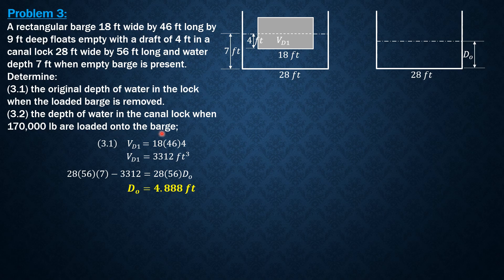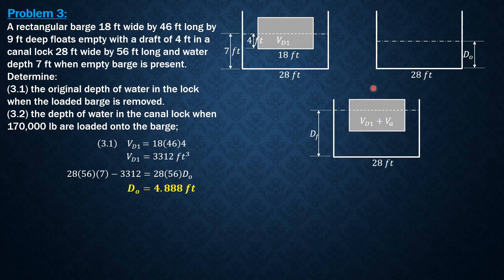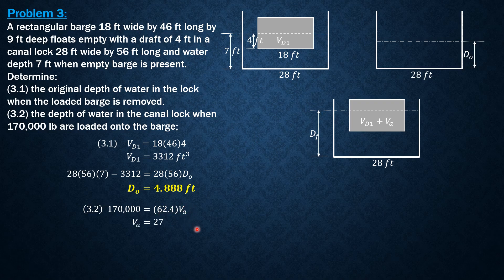For the depth of water in the canal lock when 170,000 pounds are loaded onto the barge: when an additional 170,000 pounds are loaded, the displacement volume increases from V_d1 by an additional volume V_A. This additional volume V_A is computed from: 170,000 pounds equals the specific weight of water, 62.4 pounds per cubic foot, times V_additional. So V_additional equals 2,724.359 cubic feet.